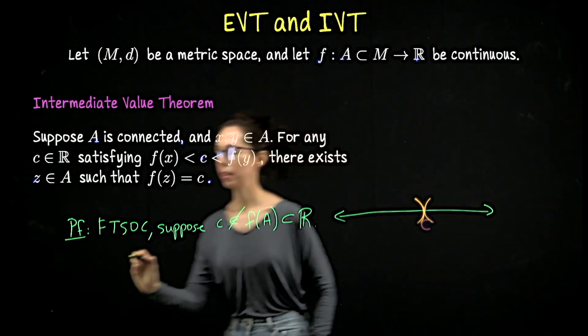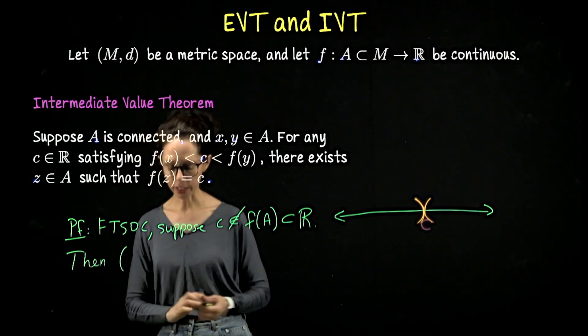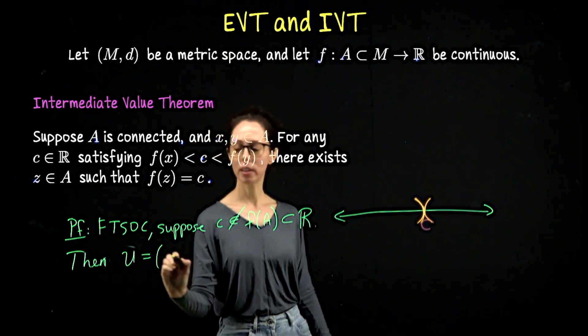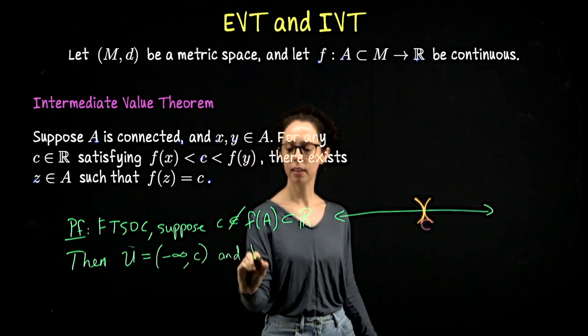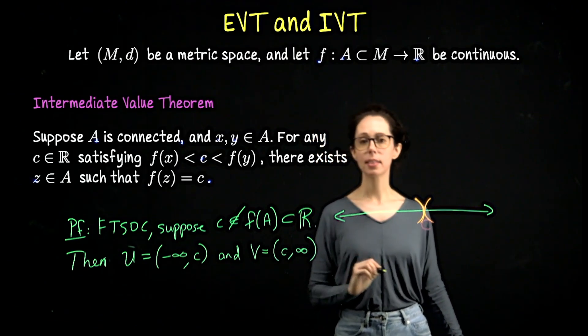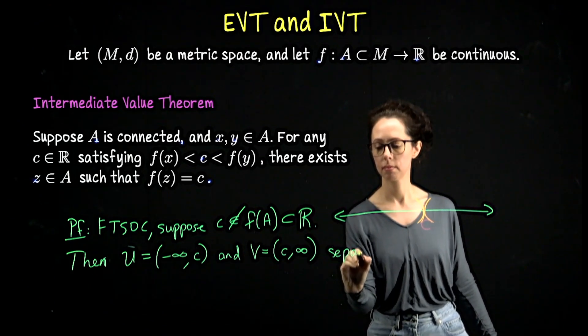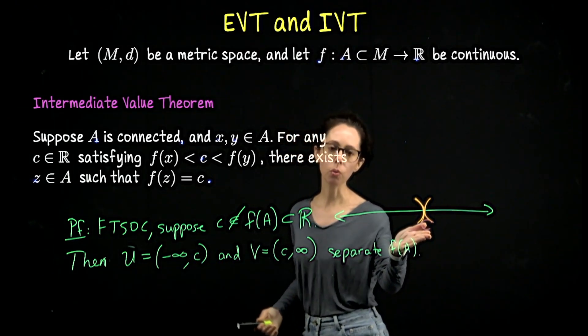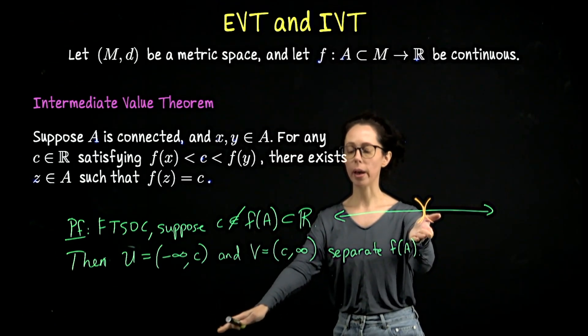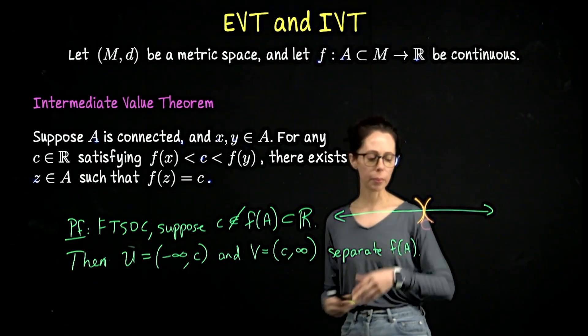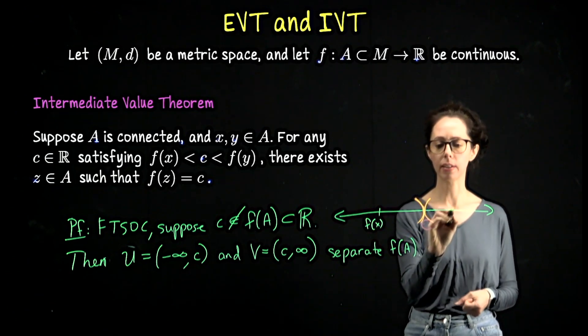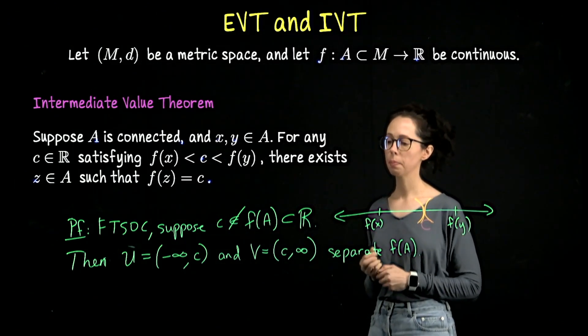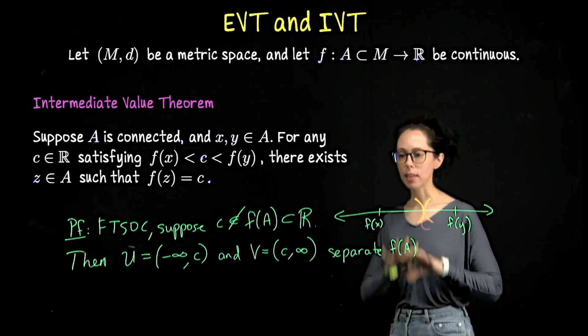Let me write that down. Then I'll call it U and V to match the language we used when we discussed connected sets. Then U defined as the open interval from negative infinity to c, and V which is the open interval from c to infinity, separate f(A). Together they cover f(A) because the only point they don't cover with their union is c, but that's not in f(A). So every possible output is being covered. They both contribute to the cover because by hypothesis f(x) is down here and f(y) is over here. So both U and V are covering each individually some part of the range and they don't overlap at all. So this is a valid separation of f(A).